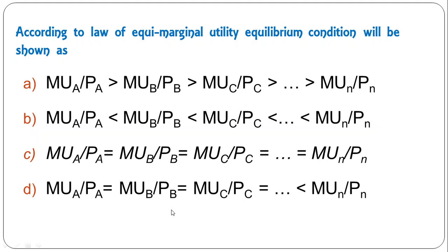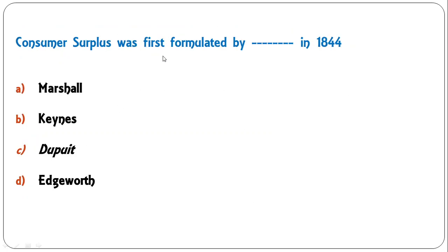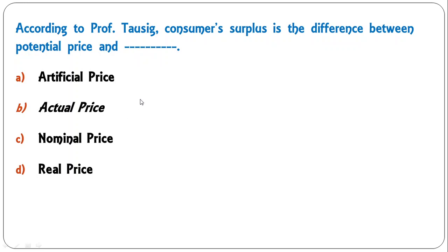Next: 'Consumer surplus was first formulated by whom in 1844?' — Marshall, King's, Dupuit, or Edgeworth? It was Dupuit; C is the correct answer. Next: 'According to Professor Tossing, consumer surplus is the difference between potential price and' — additive, artificial price, actual price, nominal price, or real price? The correct answer is actual price; B is the correct answer.